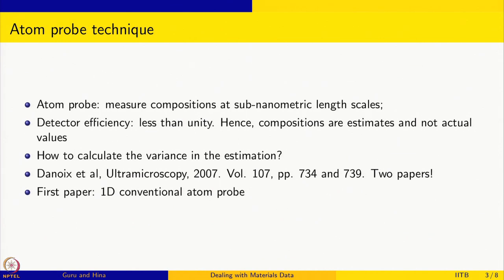The atom probe technique is a technique to measure compositions at sub-nanometric length scales. The composition measurement depends on detector efficiency, and detector efficiency is less than 1. That means if there are 10 atoms pulled out from your sample and all 10 fall on the detector, the detector does not recognize all 10 of them. It detects only some fraction of the atoms that actually reach the detector, because of which the compositions we measure are actually estimates.